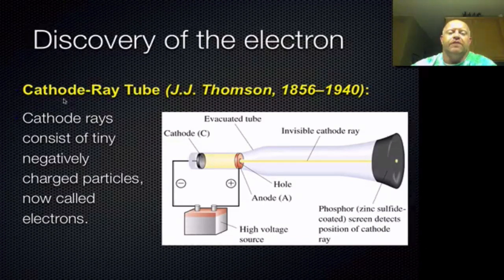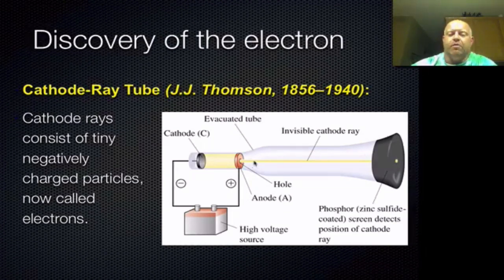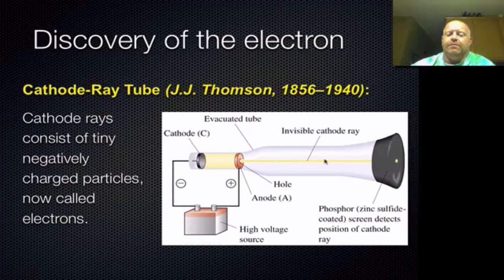This was done by using a device called a cathode ray tube by J.J. Thompson. Basically, what J.J. Thompson did was beam a ray of particles from a power source through a vacuum tube, and that beam would hit the back side of a screen. That screen was coated with phosphor, and what phosphor does is it glows when electrons hit it.